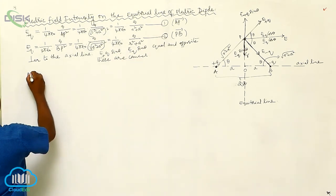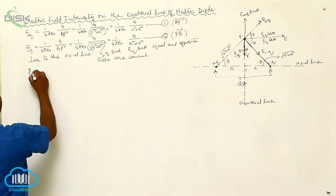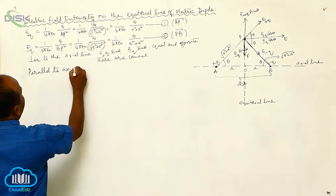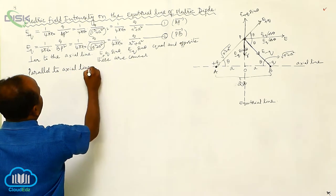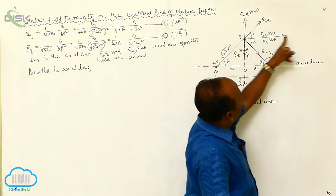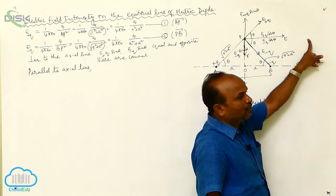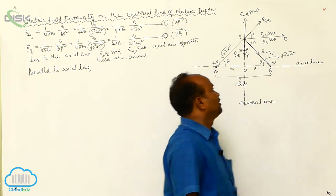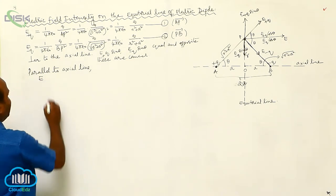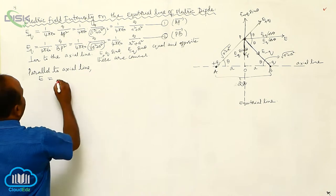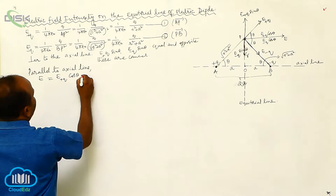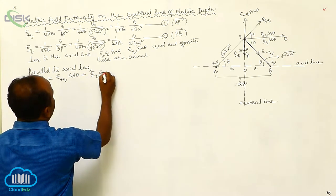Along the axial line, parallel to the axial line, EF plus Q cos theta and EF minus Q cos theta are both in the same direction. Therefore, the resultant field intensity E is equal to EF plus Q cos theta plus EF minus Q cos theta.